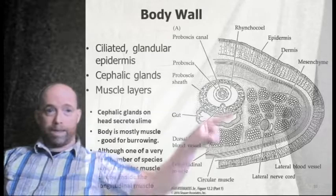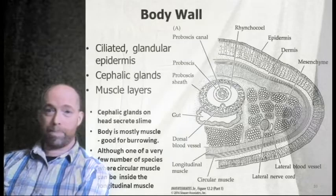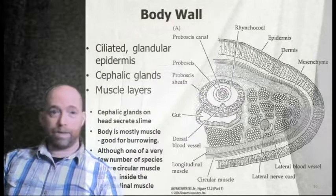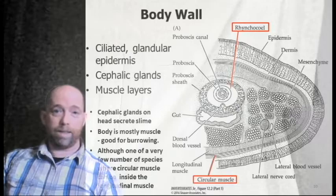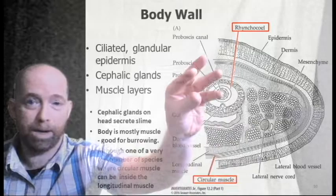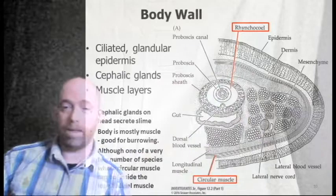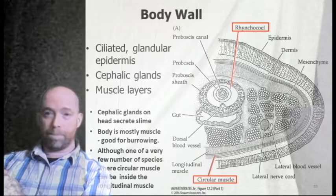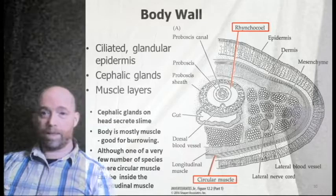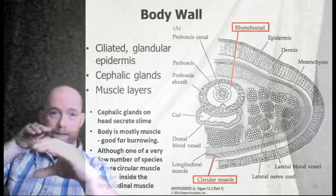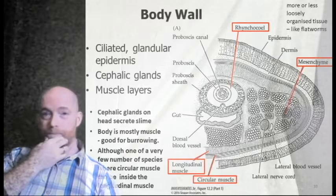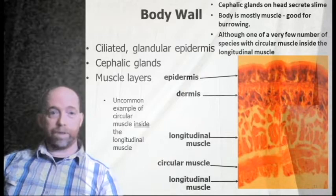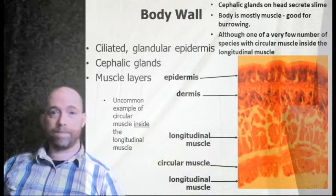Looking at a cross-section of the nemertean body wall from chapter 12: there's a ciliated glandular epidermis, cephalic glands, and different layers of muscle. The rhynchocoel is the open cavity in the center that contains the proboscis. There's lots of circular muscle around the body, cephalic glands on the head that secrete slime, and the body is largely muscular for burrowing. Notably, this is one of the few examples where circular muscle is found inside the longitudinal muscle.